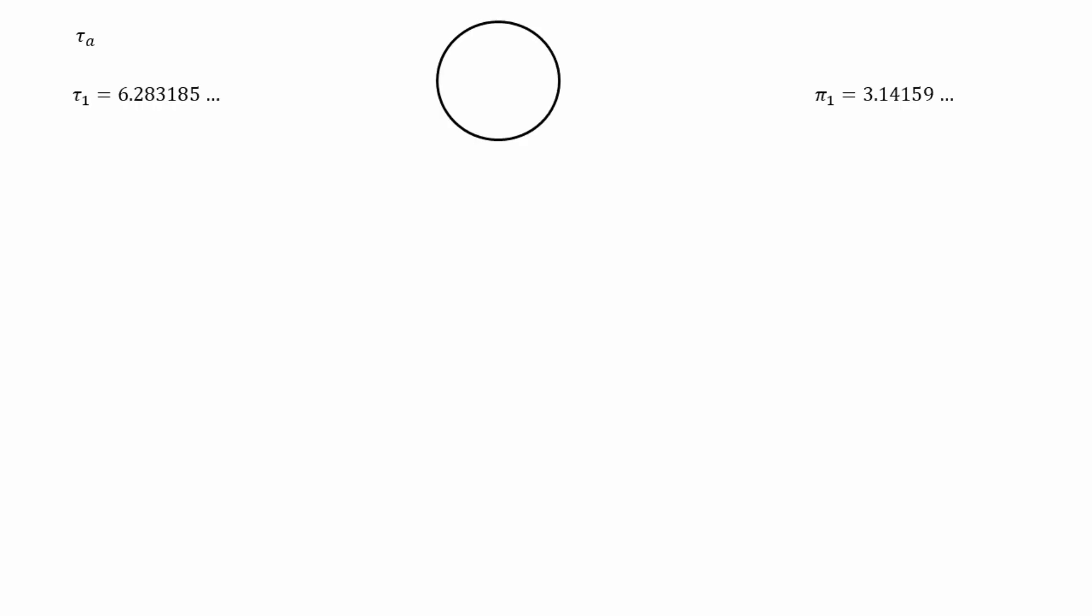So, tau depends on the aspect ratio a. Aspect ratio 1 means circle, so tau of 1 is 6.2 and similarly, pi of 1 is 3.14 as normal. As a approaches 0 and the ellipse gets more and more squashed, the value for tau tends towards 4.